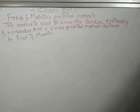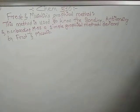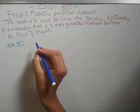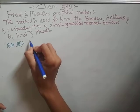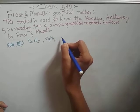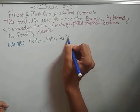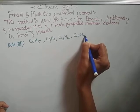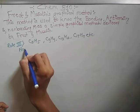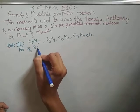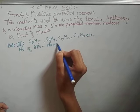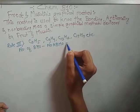Rule 3 applies to systems like C5H5, C9H9, C13H13, C17H17, etc., in which the number of bonding molecular orbitals minus the number of anti-bonding molecular orbitals is equal to 1.